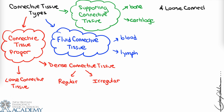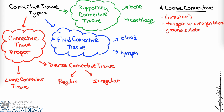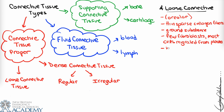Connective tissue proper breaks down into loose connective tissue and dense connective tissue. Loose connective tissue — also called areolar connective tissue — is comprised of thin, sparse collagen fibers, some ground substance, and a few cells like fibroblasts. Many of the cells found there are white blood cells that have migrated from the plasma. Loose connective tissue is usually found beneath epithelia and is a primary site of inflammation and immune reactions, including swelling.